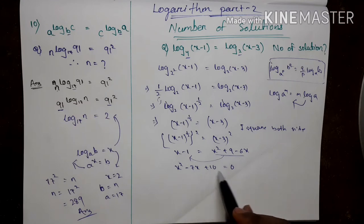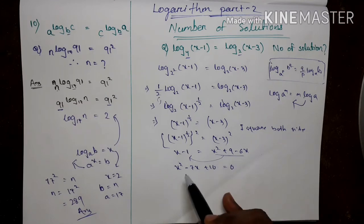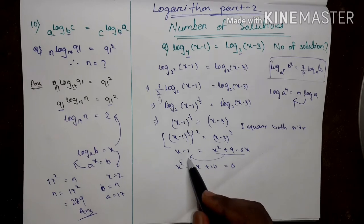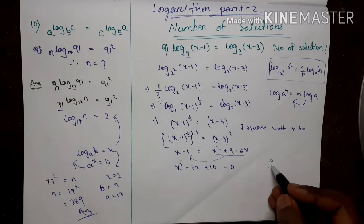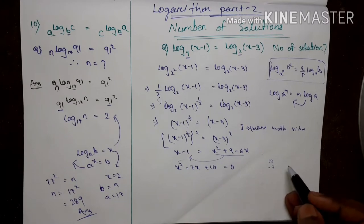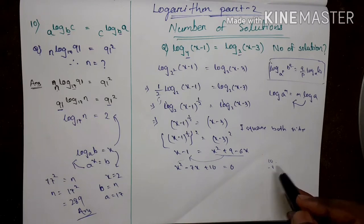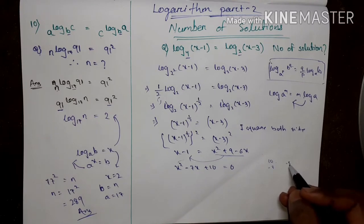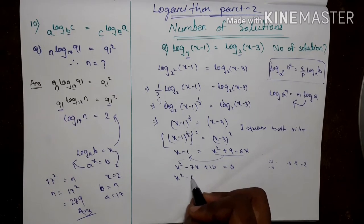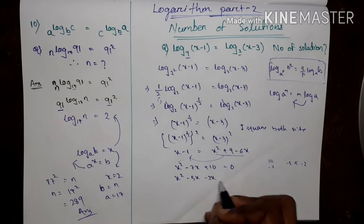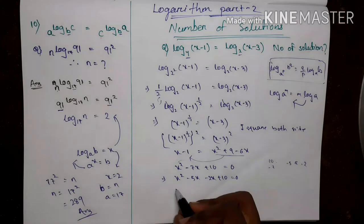This is a quadratic equation. We know from factorization: multiply must be 10 and sum must be minus 7. Those two digits are minus 5 and minus 2. So: x squared minus 5x minus 2x plus 10 equals 0.